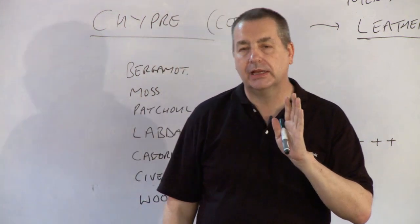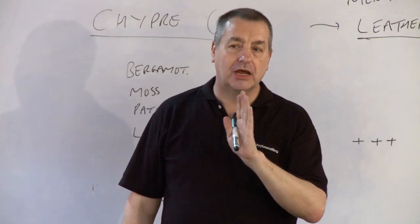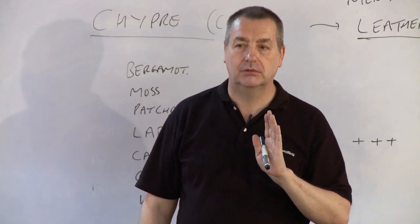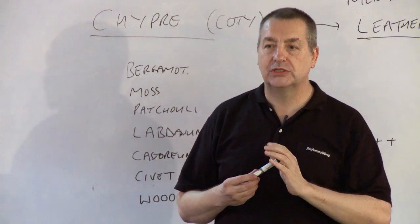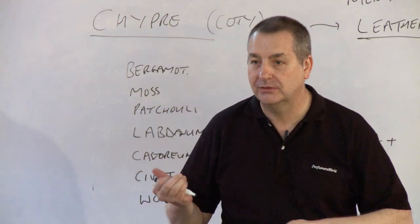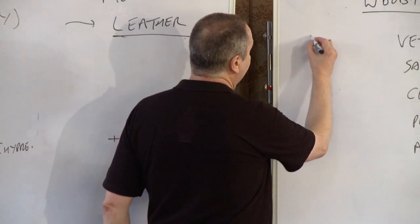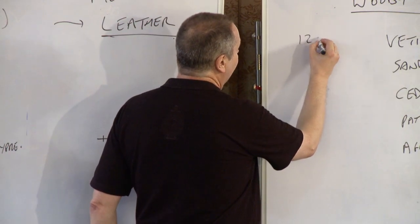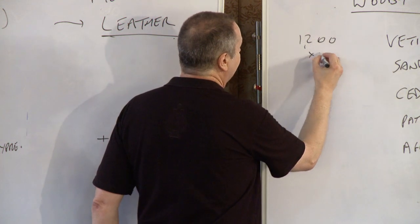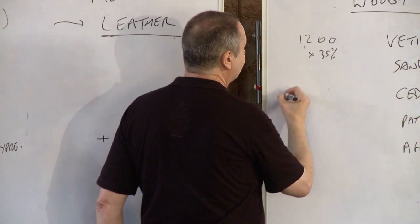but I think it's something like $1200 to $1500 a kilo, which seems really, really expensive. But bearing in mind that that perfume is something like 35%, so $1200 times 35%, how much does that give us?